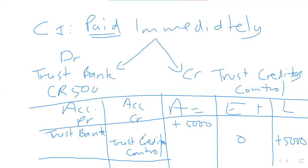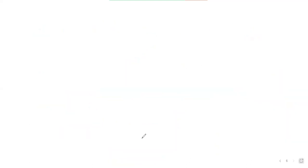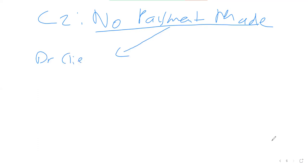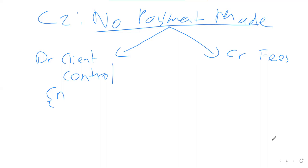Now what about when there is no payment whatsoever made by the client, but the client has requested a service? Client two: a service is requested but no payment has been made yet. Two accounts are involved — one to be debited. Because the client hasn't paid, we open a client control account, which is debited. Because this is income to us, we credit fees. Client control is an asset account and fees is income.